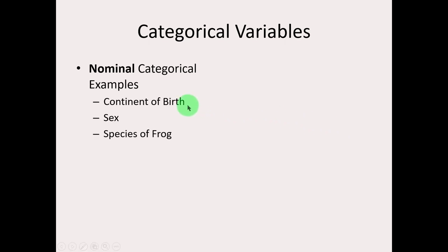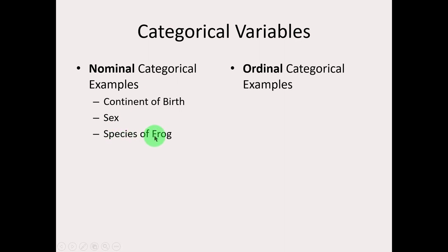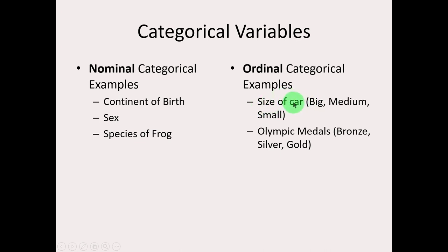Let's look at some examples. Continent of birth — listing out the continents, there's no inherent order, so this would be a nominal variable. Sex — we've already discussed that. Species of rock — also nominal. Ordinal examples: size of car and Olympic medals are variables whose categories have a natural order. Big, medium, small. Bronze, silver, gold. If you shuffle those categories, you kind of lose a little bit of the picture.